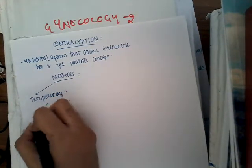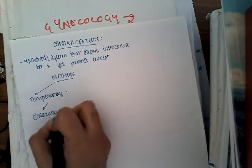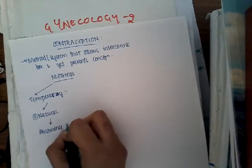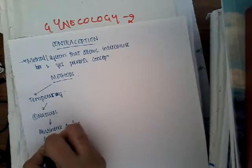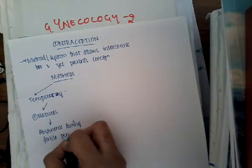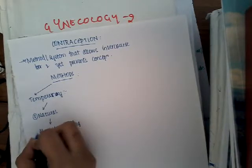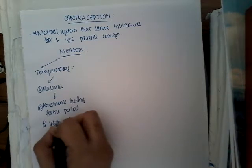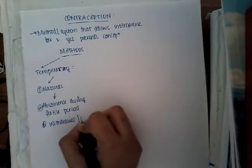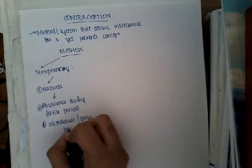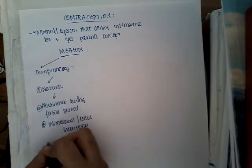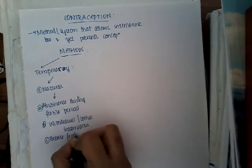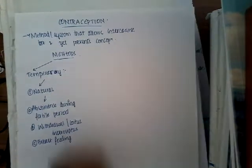In temporary methods, the first category is natural methods. These include abstinence during the fertile period, withdrawal which is also called coitus interruptus, and breastfeeding. These all come under natural methods of contraception.